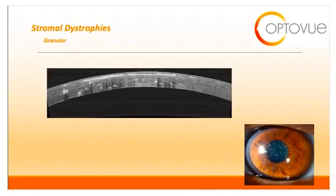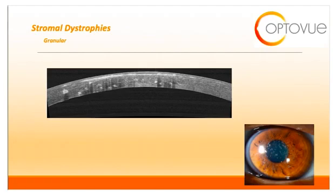Let's switch over to the corneal stromal dystrophies. The first is granular dystrophy. Granular dystrophy appears as white anterior stromal opacities in the central cornea, which are separated by clear intervening spaces. The corneal periphery is spared. OCT will show hyper-reflective spots in the corneal stroma, Bowman's, and epithelium, and can lead to a partial disruption in Bowman's.